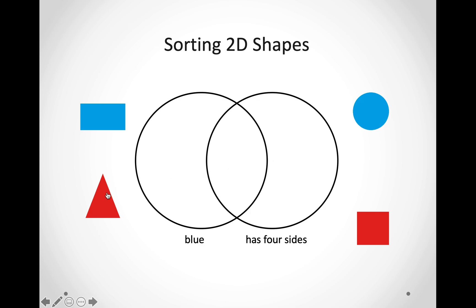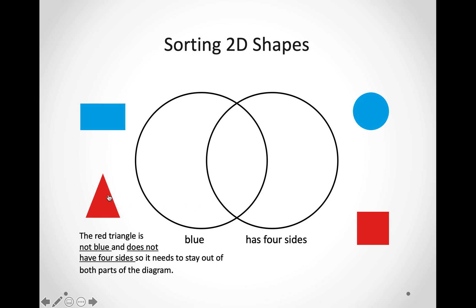Here we have a triangle. Is the triangle blue? No, it is not — it is red. Does it have four sides? Let us count: one, two, three. No. So, the triangle is not blue and it does not have four sides. It needs to stay out of both parts of the diagram.